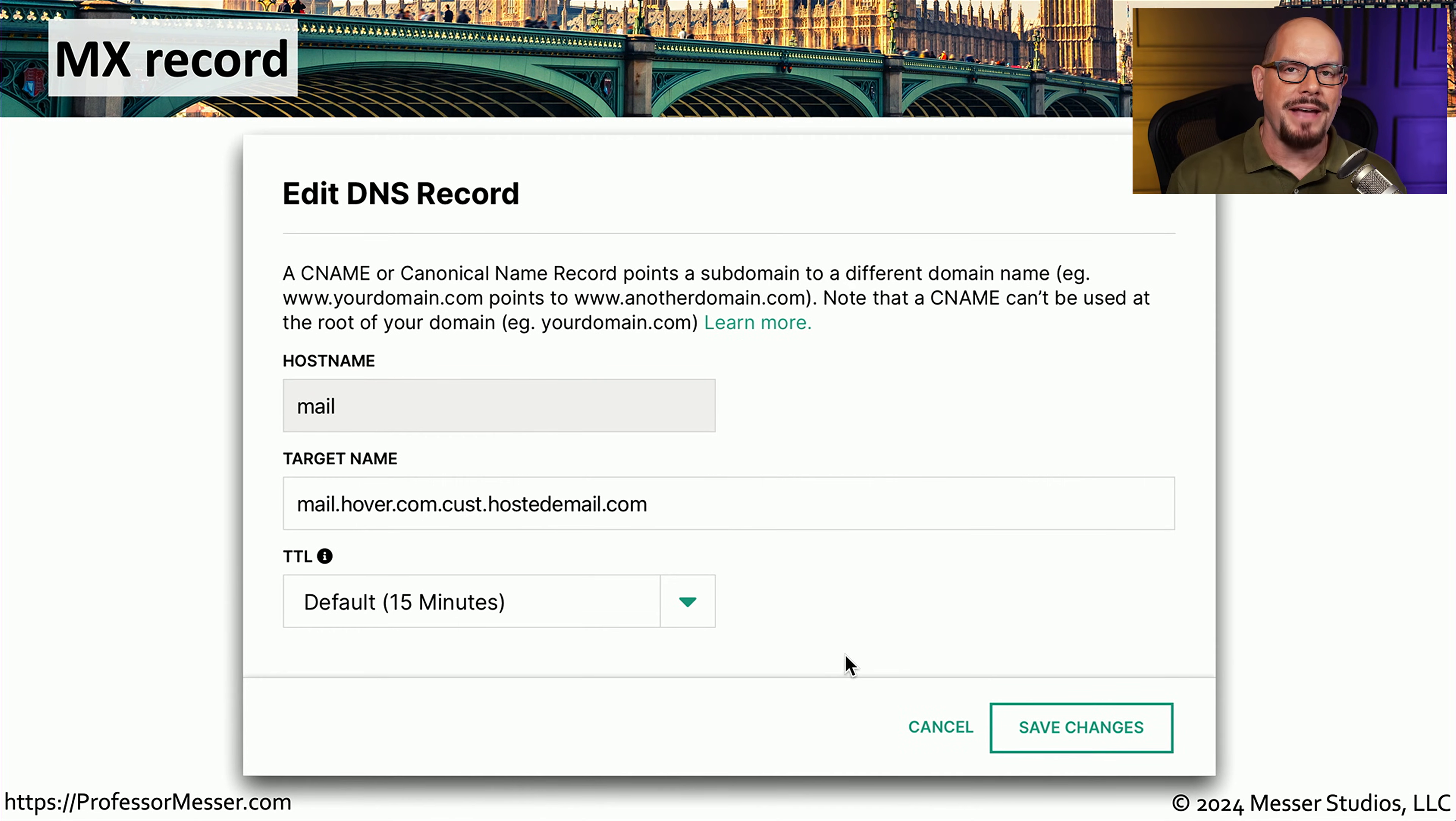On some DNS servers, you don't have access to the text-based configuration file, and all of those configuration settings need to be made in a web-based front end. Here's an example of one of those web-based front ends where we are modifying the mail record. You can see that the name is mail. It specifies the specifics of where that target name is for the mail record, and you can see the time to live, in this case, is 15 minutes on this DNS server.